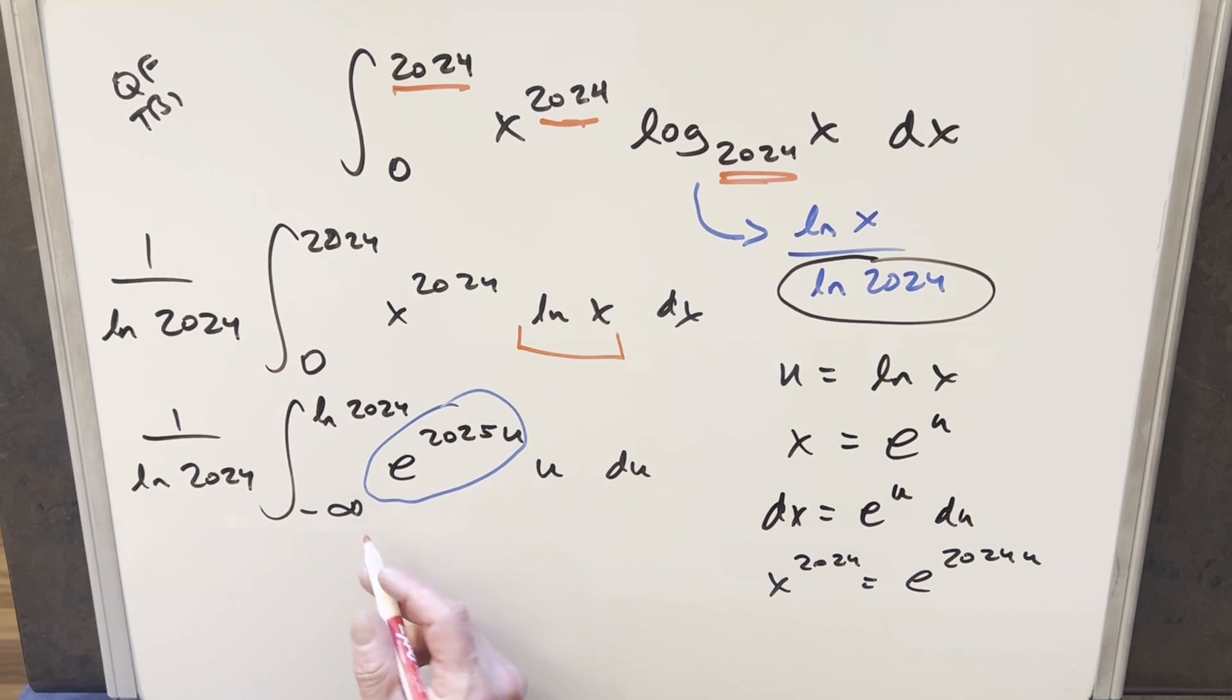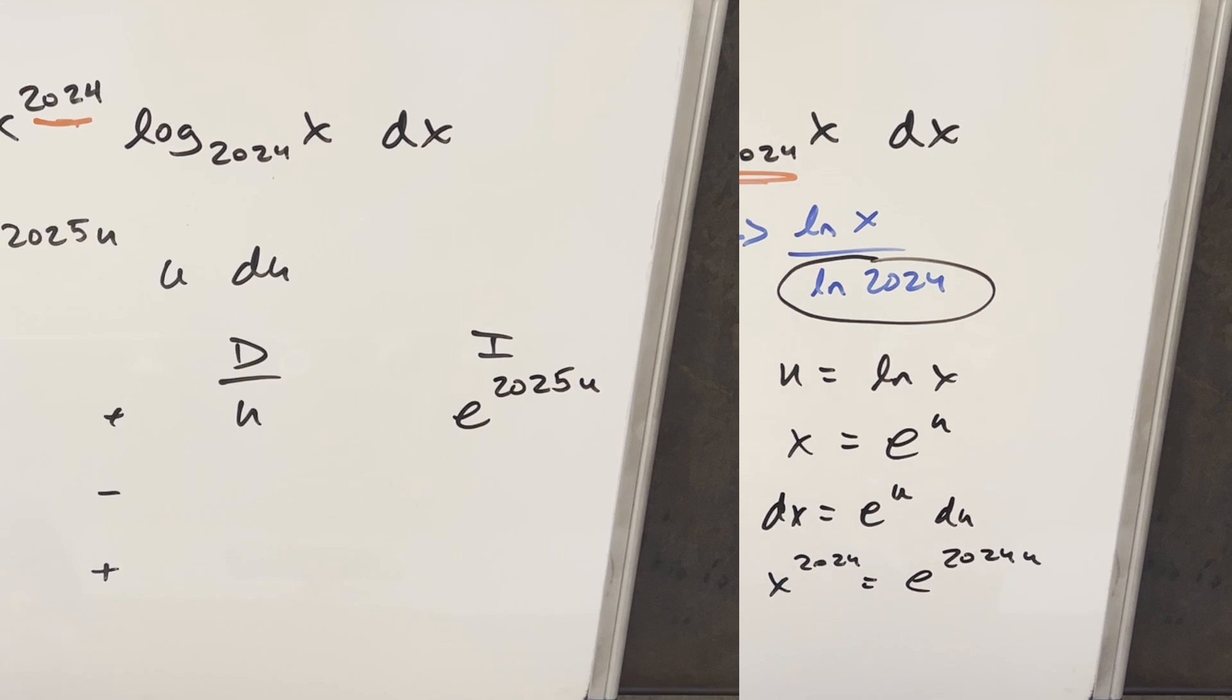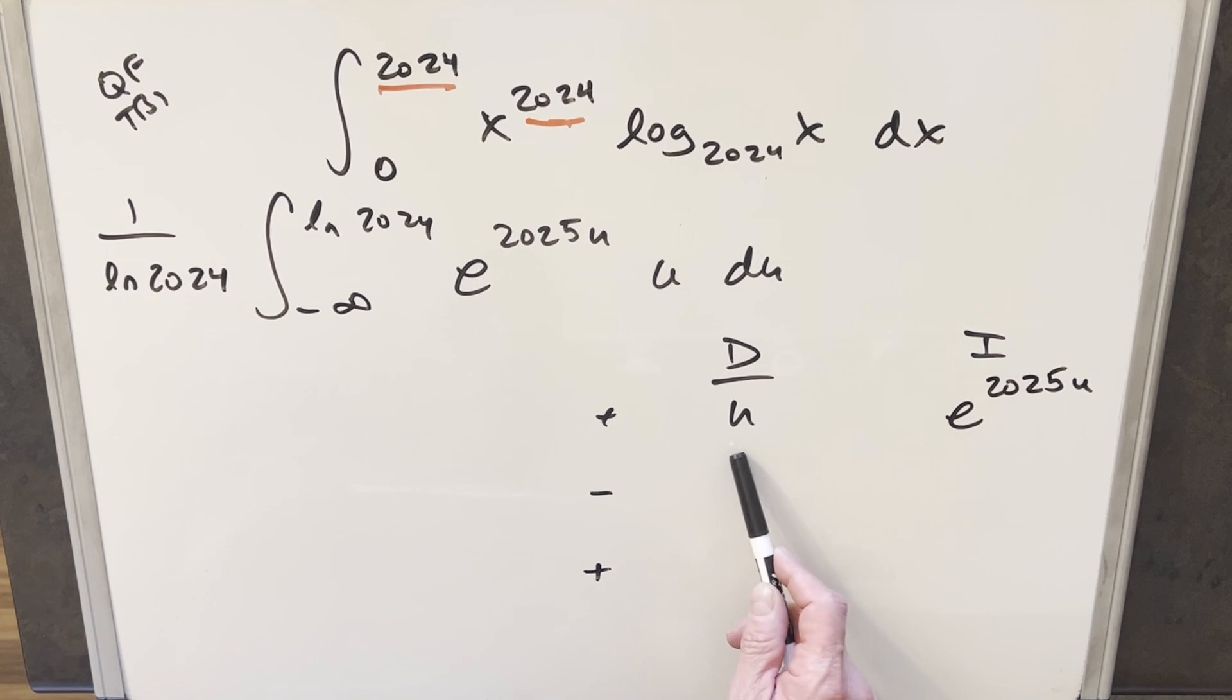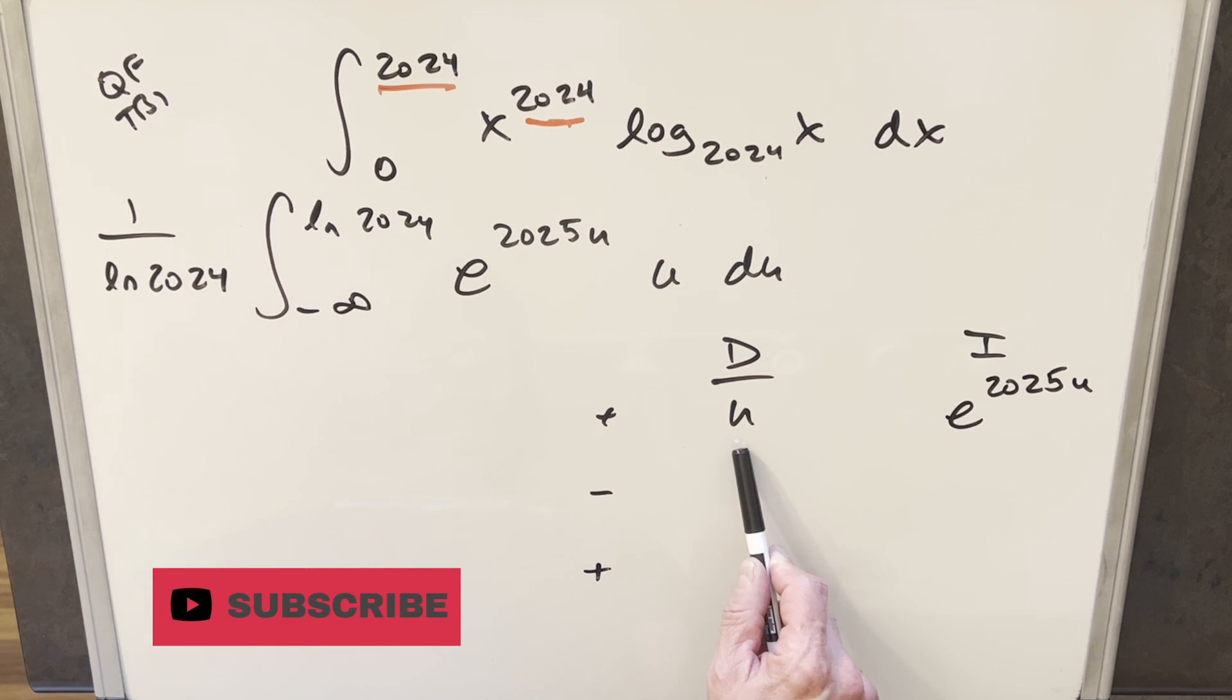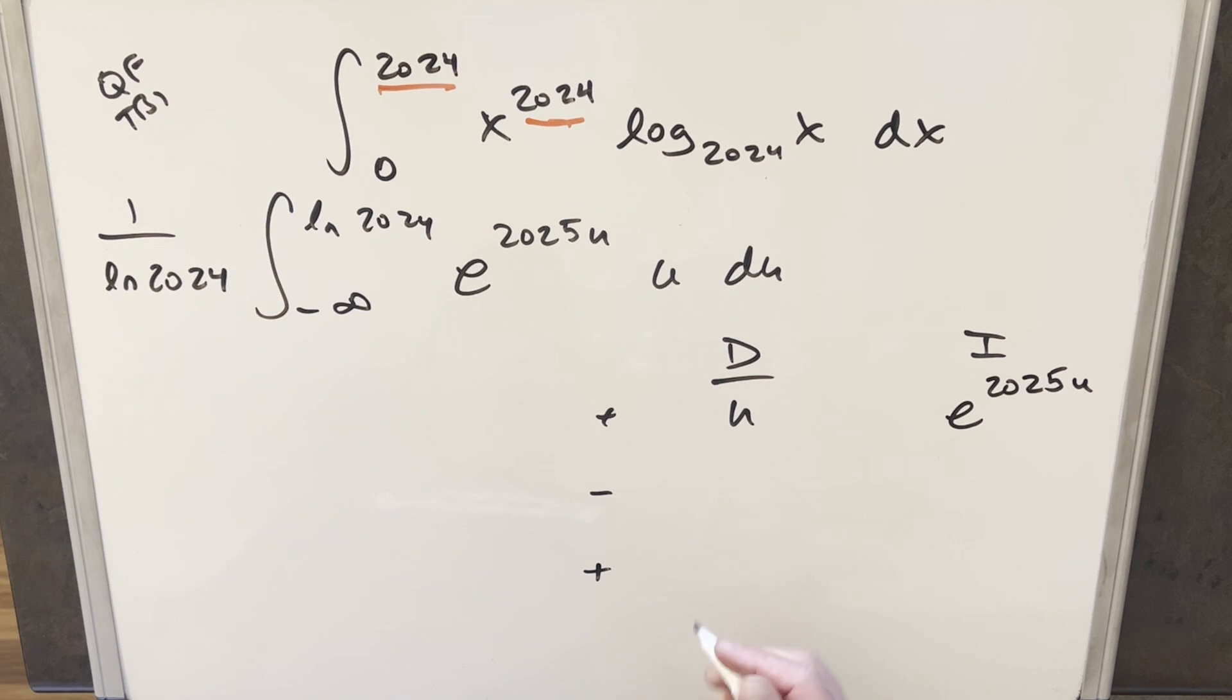But now that we have it in this form here with two functions, we're in perfect shape to do integration by parts. What I'll do is I'll use the DI method or tabular integration over to the right. Now for our DI table over here, I'm choosing u to differentiate and our exponential to integrate. The reason is because the u is just going to differentiate to 1 and then to 0. So this is going to clean up nice. Derivative of u is just 1 and derivative of 1 is just 0.